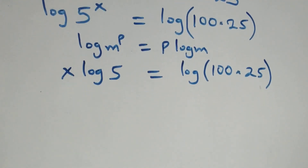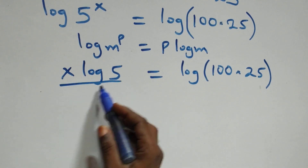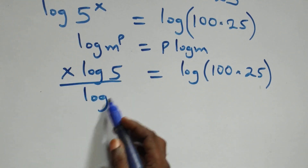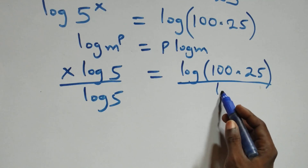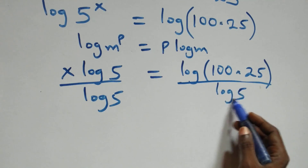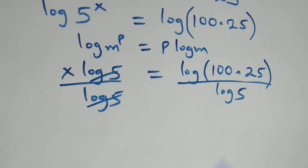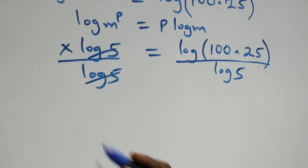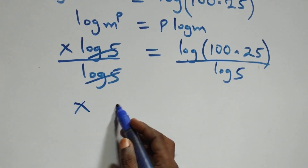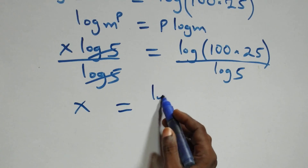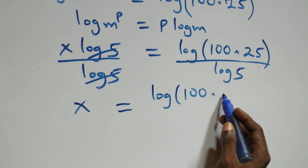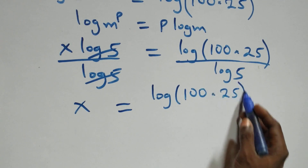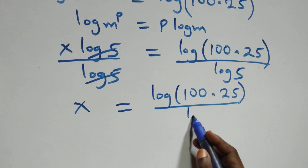Then from what we have here, we divide both sides by log 5 — divide this side by log 5 and also divide this side by log 5. On the left side, log 5 cancels with each other and x is left. Then x equals log of 100 times 25 over log 5.